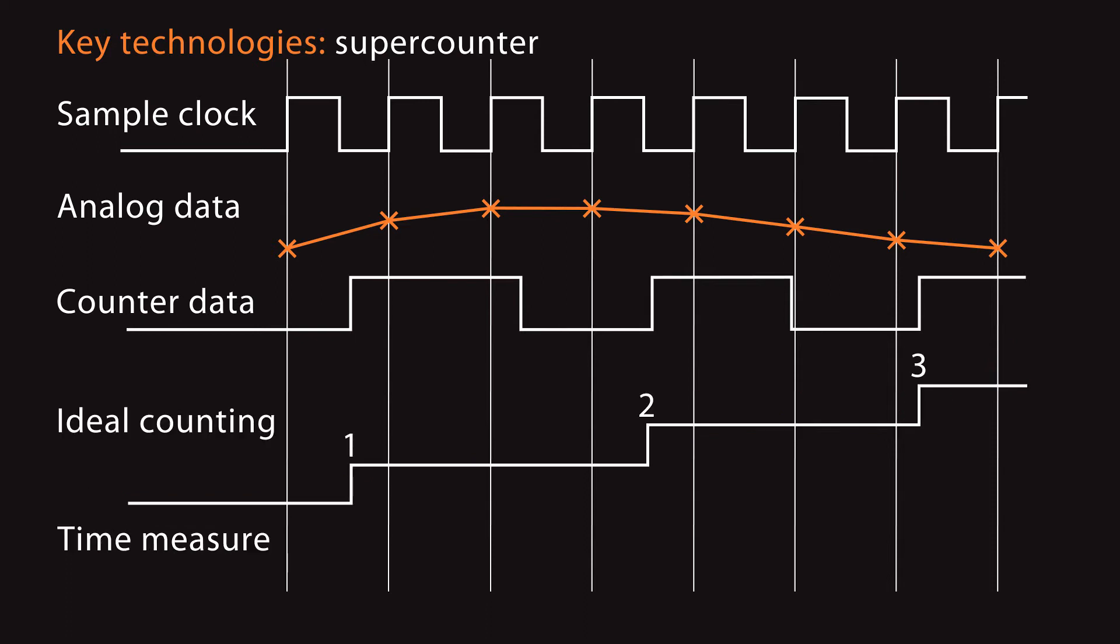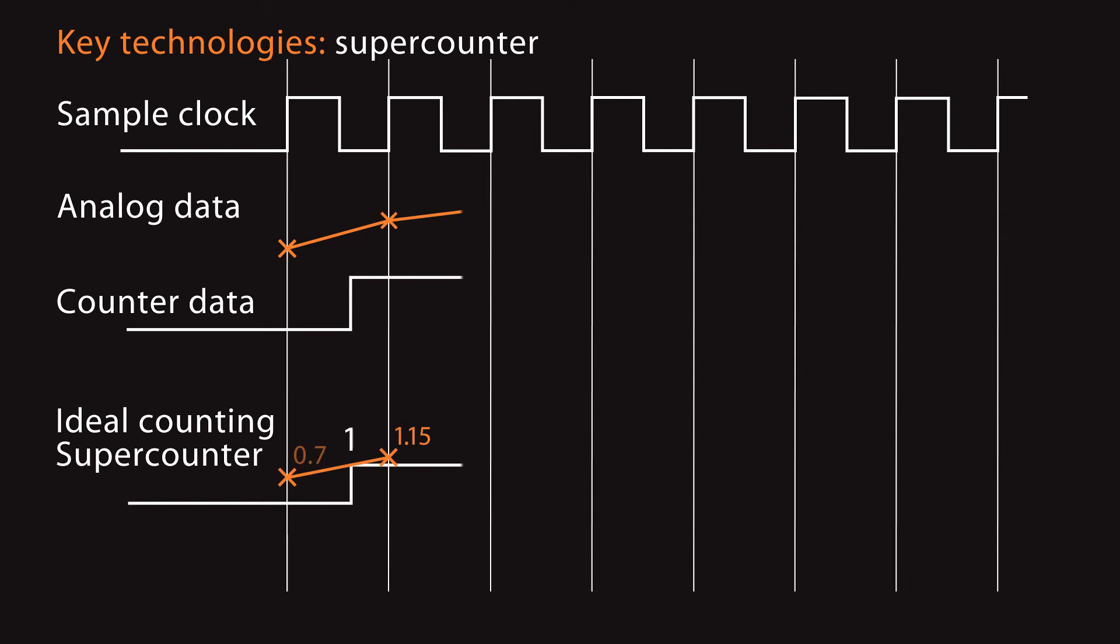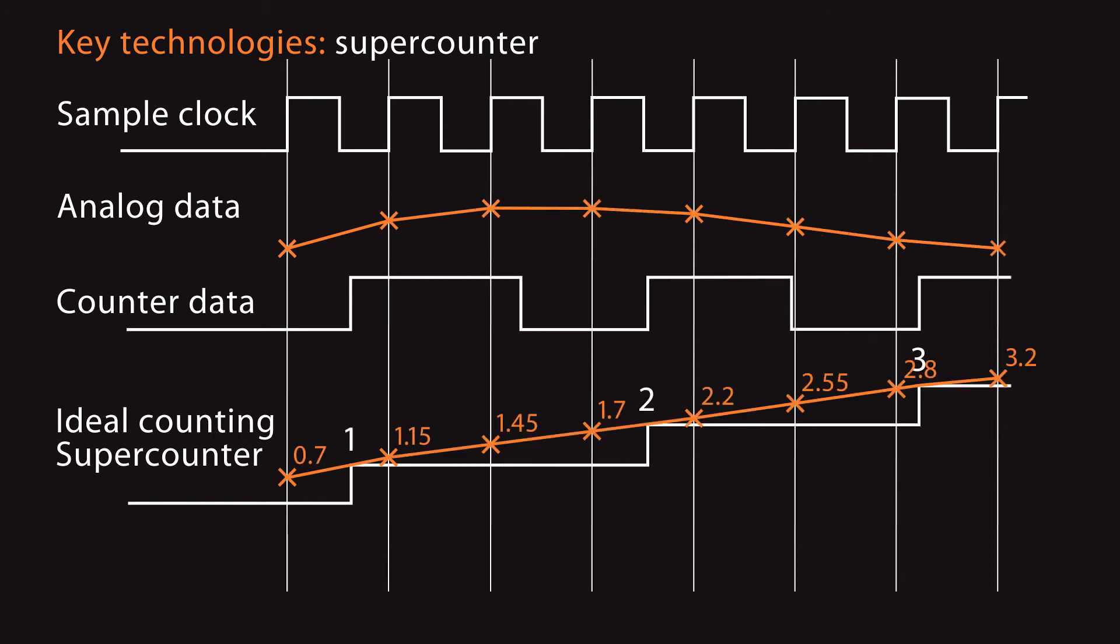Super counter measures also the time between the sample clock and pulse from the counter sensor with a 100 megahertz resolution. The software waits until the next count occurs and then calculates back to the exact angle or exact position of the sensor.